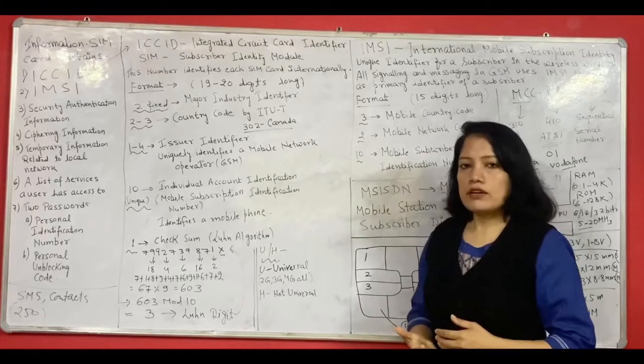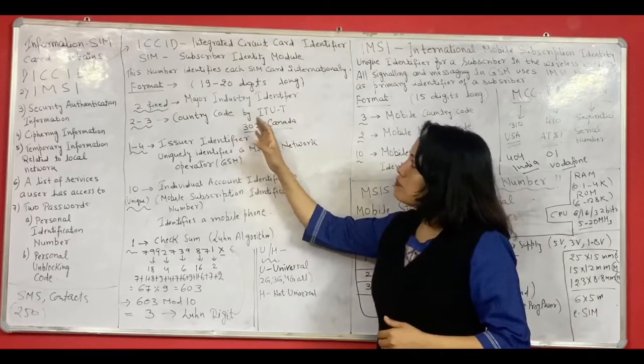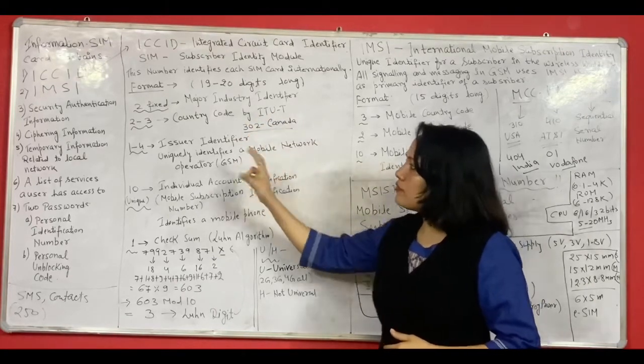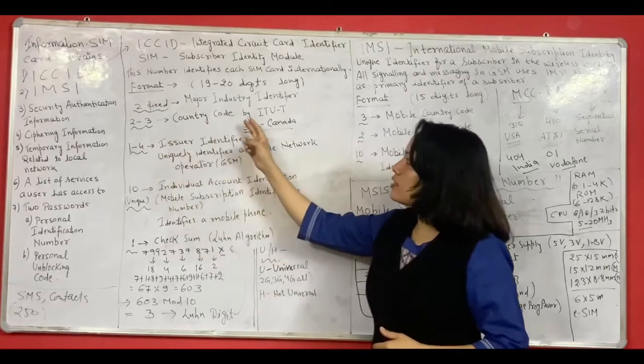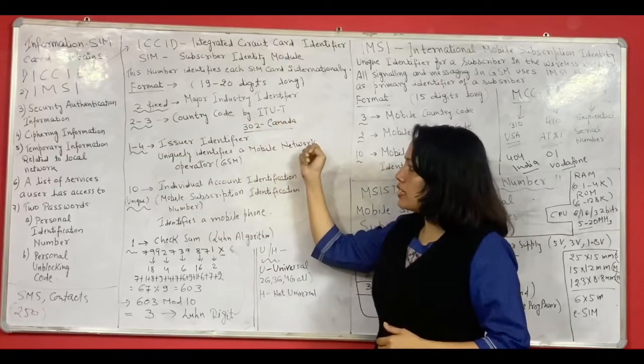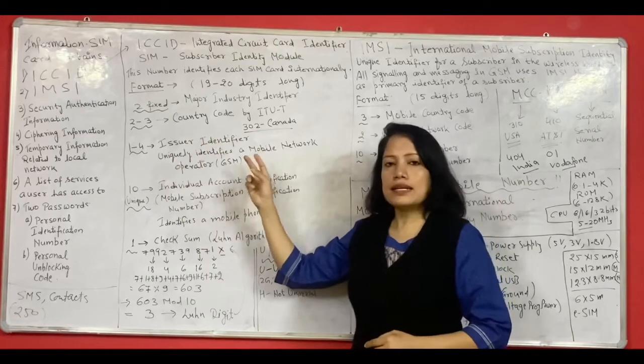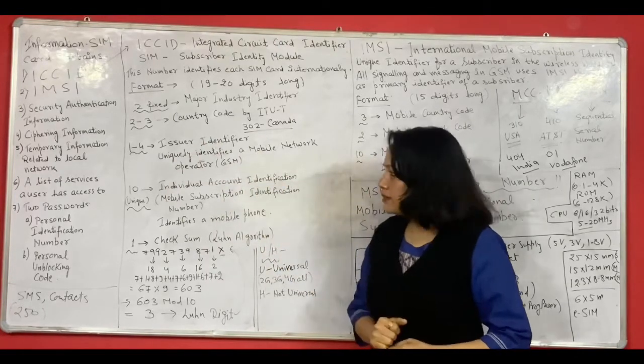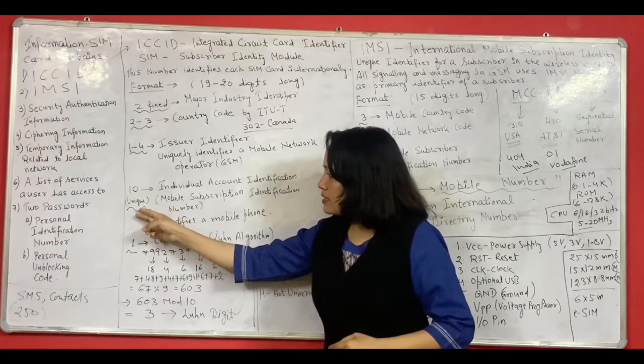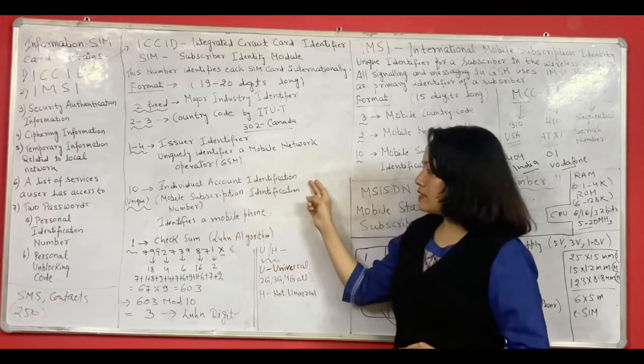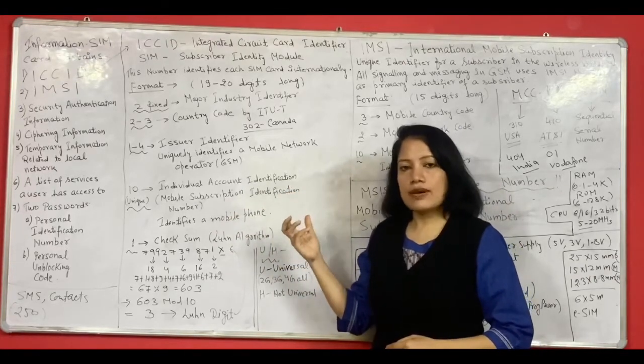Now what is the format of ICC ID or SIM number? So SIM number comprises of up to 20 digits where first two digits are fixed which is for major industry identifier. Then next two to three digits is country code by International Telecommunications Union. Then one to four digits is issuer identifier which uniquely identifies a mobile network operator. Then next ten digits which are unique with respect to a mobile SIM card which is individual account identification or mobile subscription identification number. And this identifies a mobile phone.